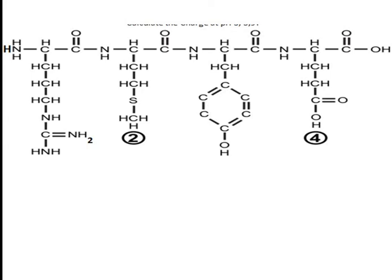Before calculating the charge of this peptide at pH 3, we must know the pKa values of the alpha amino group, alpha carboxyl group, and the ionizable group present in the side chain of each amino acid. The pKa of the alpha amino group of arginine is 9, the side chain amino group of arginine is 12.5, the OH group of tyrosine is 10.1, the side chain carboxyl group of glutamic acid is 4.2, and the alpha carboxyl group has a pKa of 2.2.